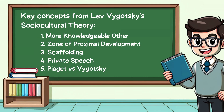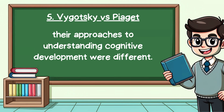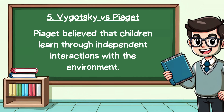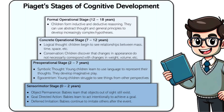The fifth important concept is the differences between Vygotsky and Piaget. While both were developmental psychologists, their approaches to understanding cognitive development were different. Piaget believed that children learn through independent interactions with the environment, using the term 'lone scientists' to explain how children learn through environmental interactions. He also thought that all children learn at roughly the same pace through a series of developmental stages.